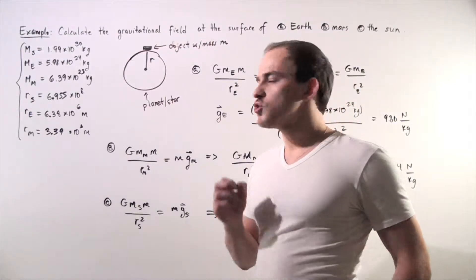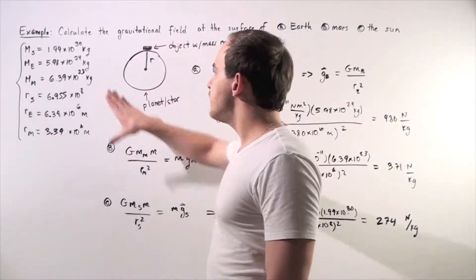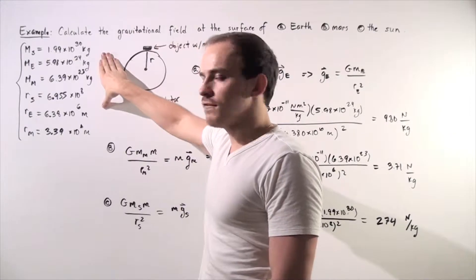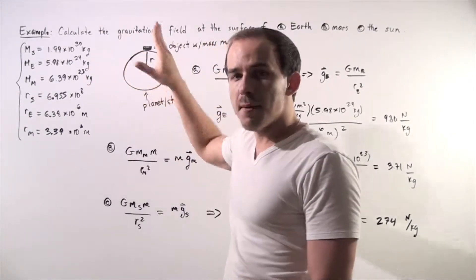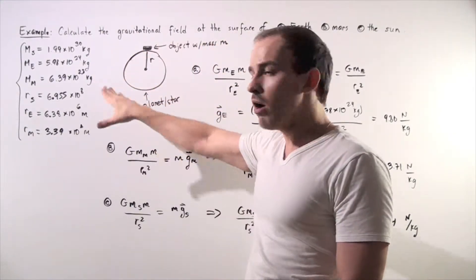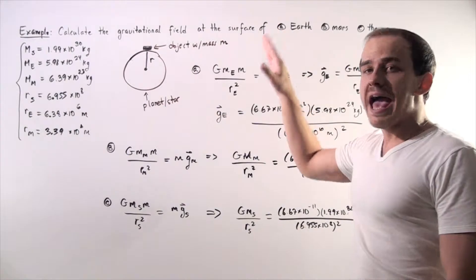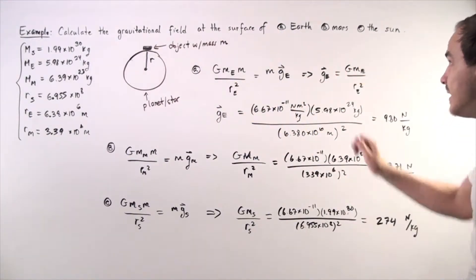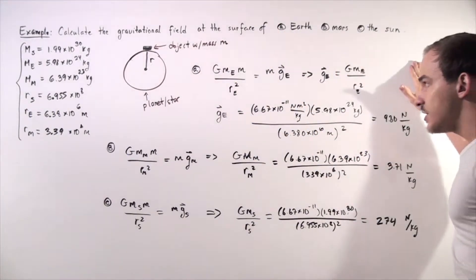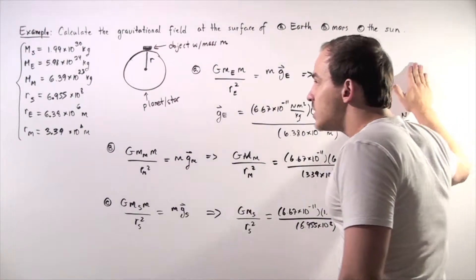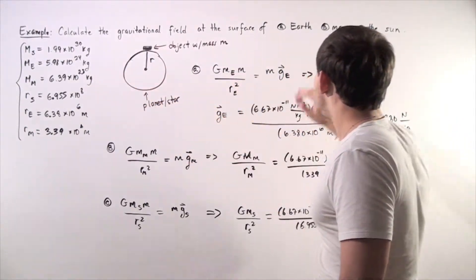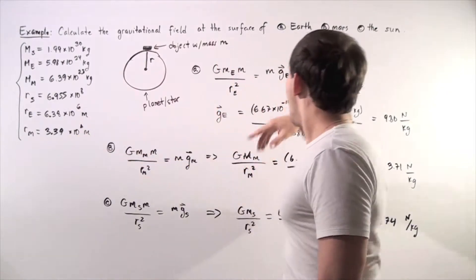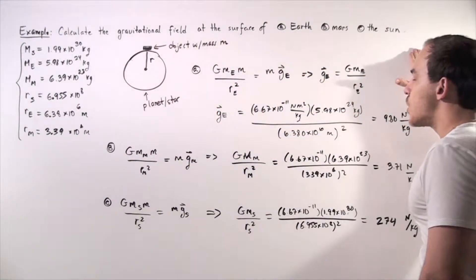We are given the following information and we want to use it to calculate the magnitude of the gravitational field at the surface of: A, the Earth; B, Mars; and C, the Sun. We know the mass and radius of each of these objects.